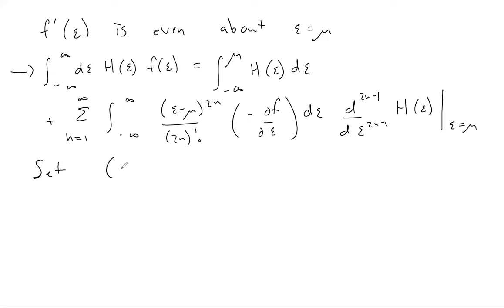So we can make a further simplification by setting E minus mu over kBT to some variable called x. Then the integral that we want, which is H times F,